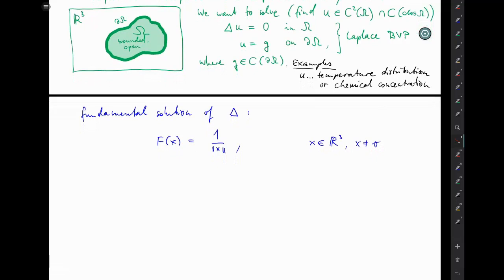For reasons of normalization you usually put a factor in front here which is 1 over 4π, which is of course not changing this property here. And the 4π has to do with the surface area of the unit ball in 3D. And in fact for reasons of the right orientation you also put a minus sign in front.